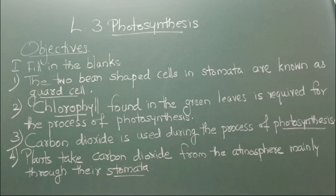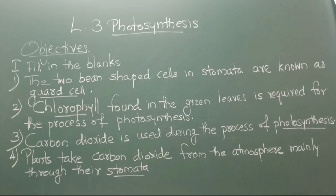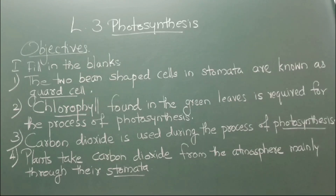Number 1: The two bean-shaped cells in stomata are known as blank. The answer is guard cells. Number 2: Blank found in the green leaves is required for the process of photosynthesis. The answer is chlorophyll.